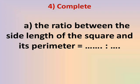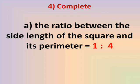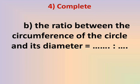Number 4: Complete the ratio between the side length of the square and its perimeter. The perimeter of a square equals side × 4, so the ratio between one side to the perimeter (which is 4 sides) is 1 to 4. One side to four sides gives ratio 1 to 4.